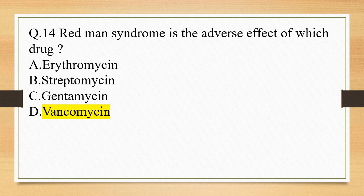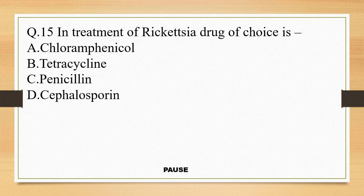Question 15. In treatment of Rickettsia, drug of choice is: option A, chloramphenicol; option B, tetracycline; option C, penicillin; option D, cephalosporin. And the right answer is option B, tetracycline. So in treatment of Rickettsia, drug of choice is tetracycline.